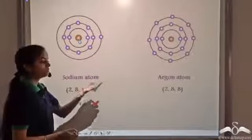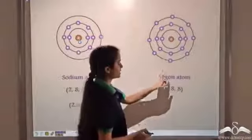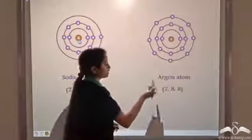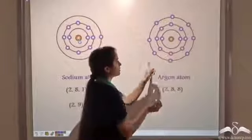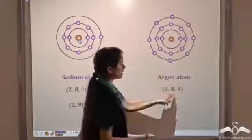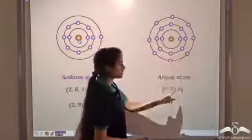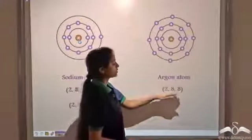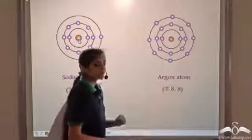For argon, which has 18 electrons, it obeys the 2n² rule. The first shell, the K shell, has 2 electrons; the L shell has 8 electrons; and the M shell has 8 electrons. So the electronic configuration of argon is 2, 8, 8.